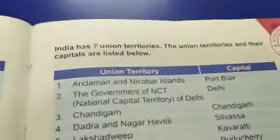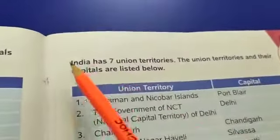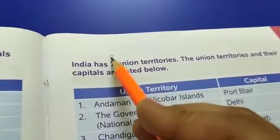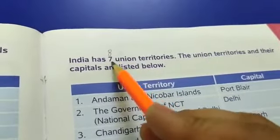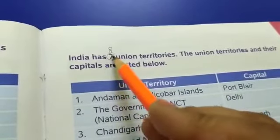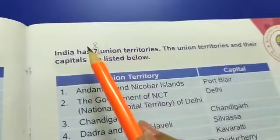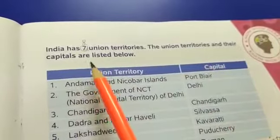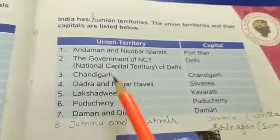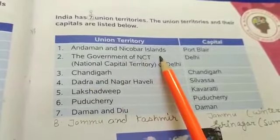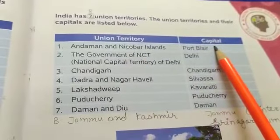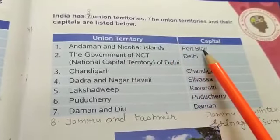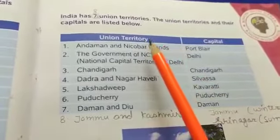After that, India now has eight union territories including Jammu and Kashmir. Cut seven and write eight — India now has eight union territories. The union territories and their capitals are listed below. First is Andaman and Nicobar Islands and the capital of Andaman and Nicobar Islands is Port Blair.